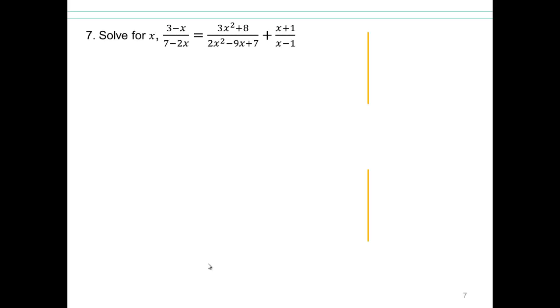All right. Again, we have a fraction, so what should we do? Well, first of all, factor that quadratic denominator. And remember this. This bottom is 0 when x is 7 halves. And this bottom is 0 when x is 1. So right away, you know 1 and 7 halves cannot be solutions, because they make denominator 0. So those are the restrictions, then, on this equation here.